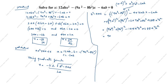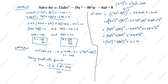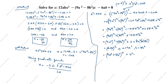So b² minus 4ac equals (9a²)² plus 144a²b² plus (8b²)². We can split this as (9a²)² plus (8b²)² plus 2 times 9a² times 8b², which matches the (a plus b)² format with a equals 9a² and b equals 8b². Therefore b² minus 4ac equals (9a² plus 8b²)².